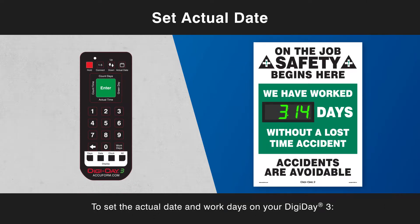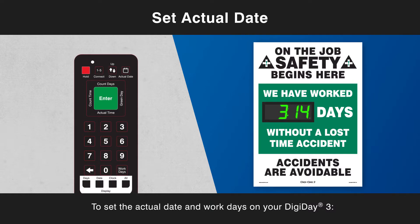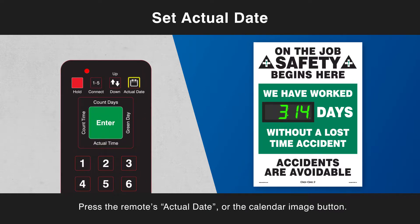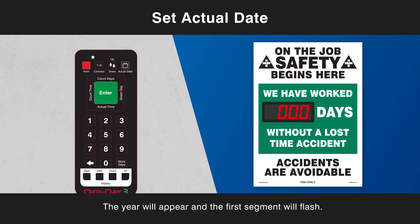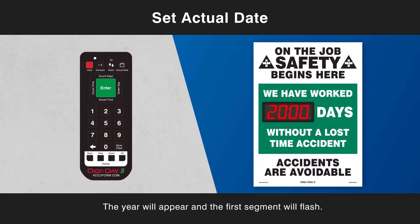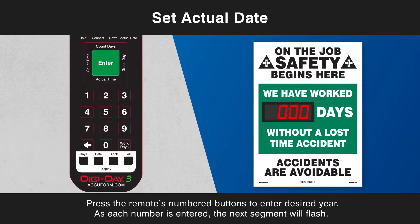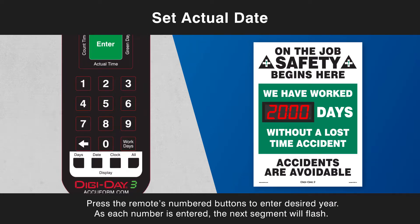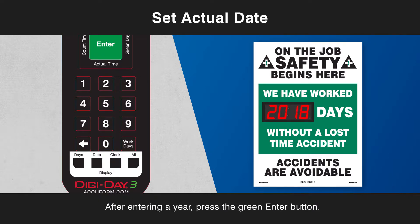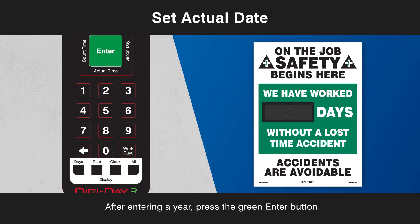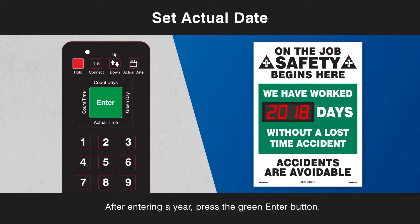To set the actual date and work days on your DigiDay3, press the remote's actual date or the calendar image button. The year will appear and the first segment will flash. Press the remote's numbered buttons to enter the desired year. As each number is entered, the next segment will flash. After entering a year, press the green enter button.